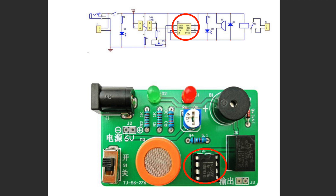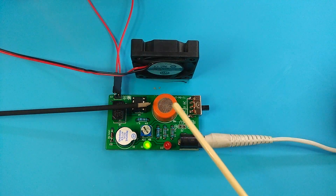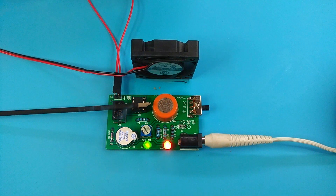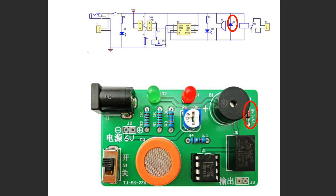This circuit uses the second comparator inside the NE555 to detect voltage changes, using its internal trigger to debounce. Pins 7 and 5 of the NE555 are not used and are left floating. The output terminal J3 of the relay can be used to control other electrical appliances, such as exhaust fans. When the alcohol concentration exceeds the standard, the exhaust fan is activated; after concentration drops, it turns off to realize automatic control.